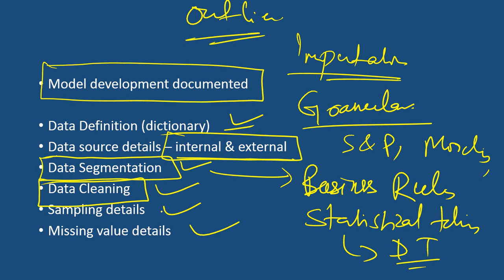Sampling details are also important. Many times you do not take the entire sample — you take a subset. If you take a subset, you tend to miss a lot of other observations. Proper and unbiased sampling should be done. The validator should ensure that the model developer has given enough attention to this.